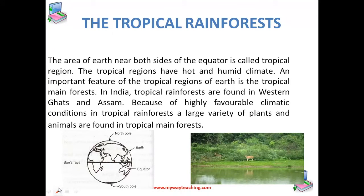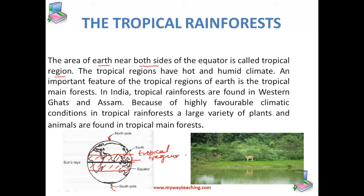Let us now talk about the tropical rainforest. The area of earth near both sides of the equator is called the tropical region. Here we can see the equator, with the poles on either side, and the region near the equator on both sides is called the tropical region. This tropical region has a hot and humid climate, and an important feature of it is the tropical rainforest.